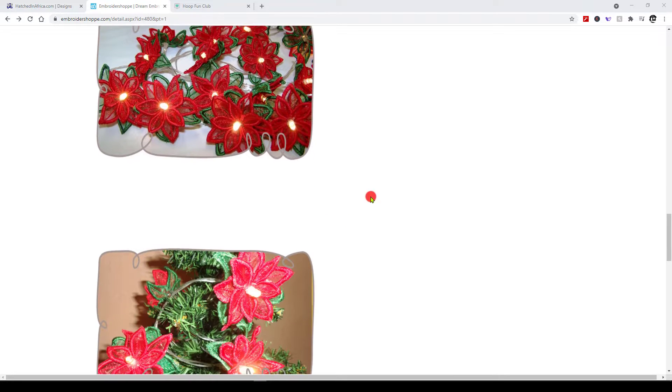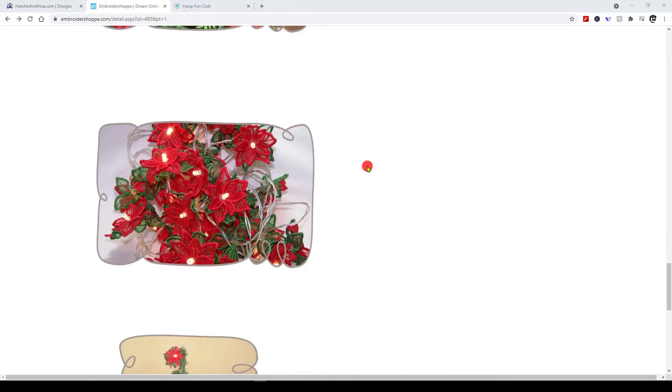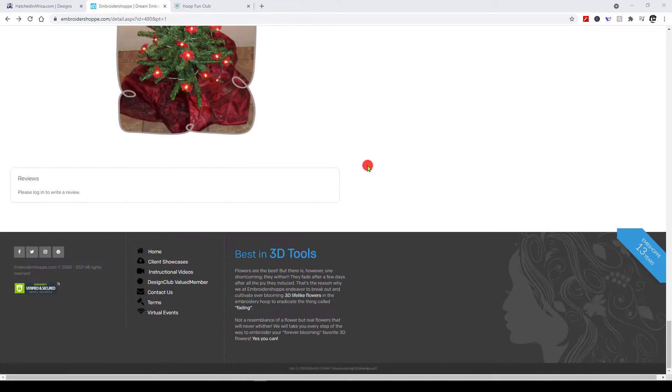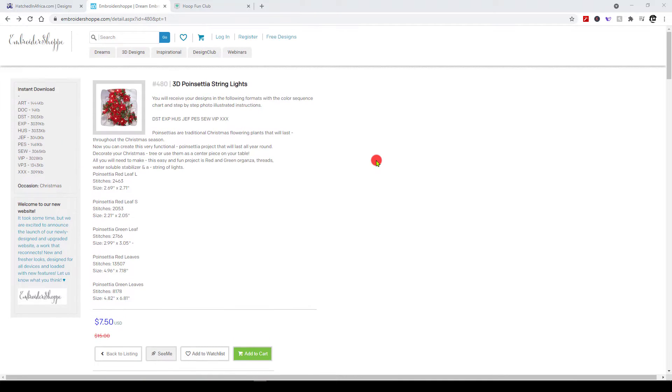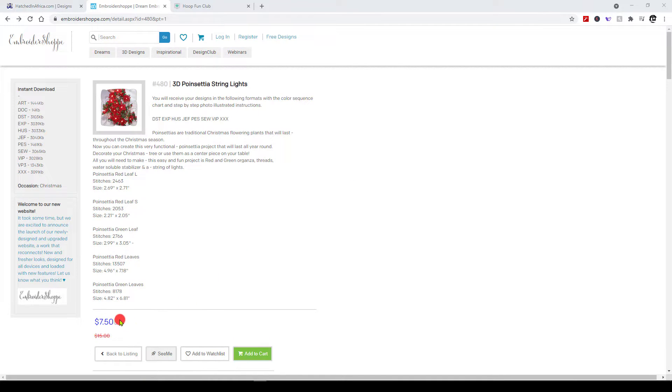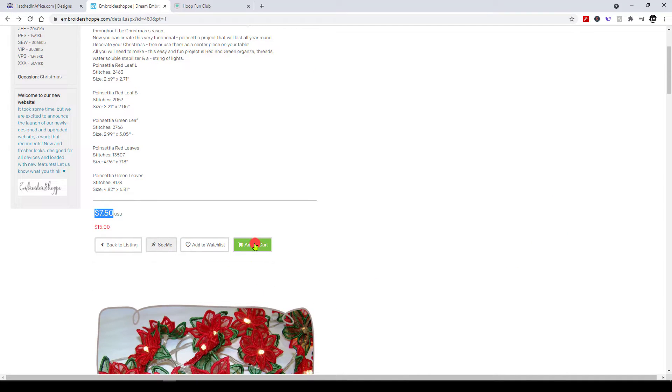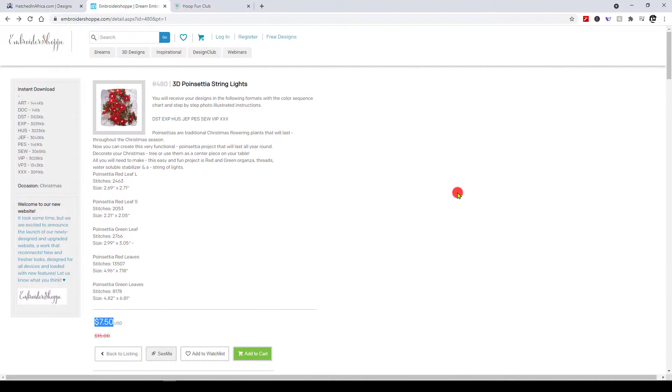Poinsettias with little lights in them. Right now it's on sale for seven fifty so I just purchased mine and all I did was add it to my cart. Once it was added to my cart and I went to pay for it, it said which version would I like. Well, since I use a Brother machine, this is what I use the PES type files.